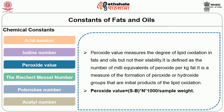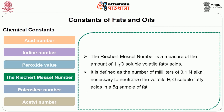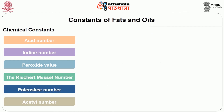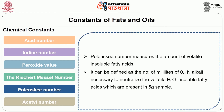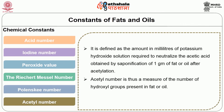The Reichert-Meissl (RM) number is a measure of the amount of water-soluble volatile fatty acids — note that some volatile fatty acids are water soluble. It is defined as the number of milliliters of 0.1 N alkali necessary to neutralize the volatile water-soluble fatty acids. The Polanski number gives the measure of the amount of volatile insoluble fatty acids. So: RM number = volatile soluble fatty acids; Polanski number = volatile insoluble fatty acids.